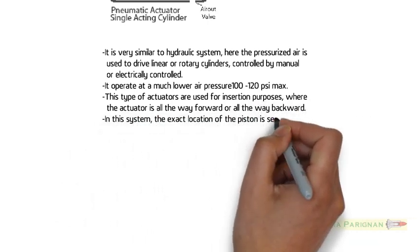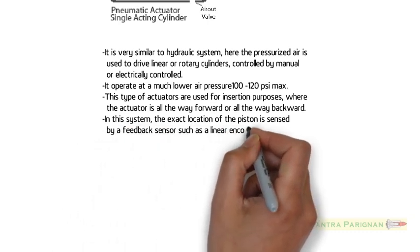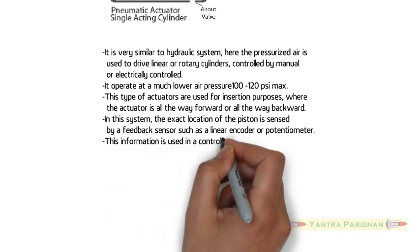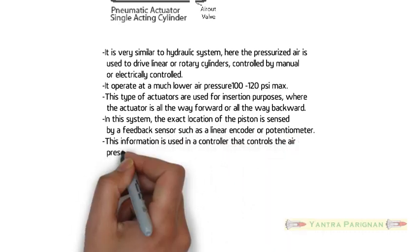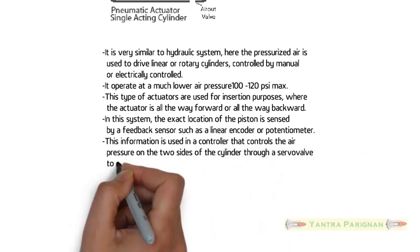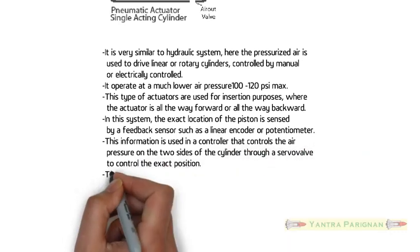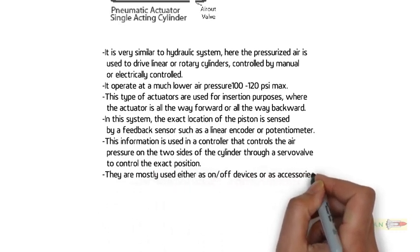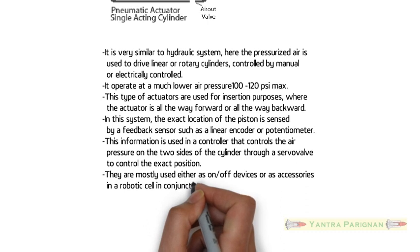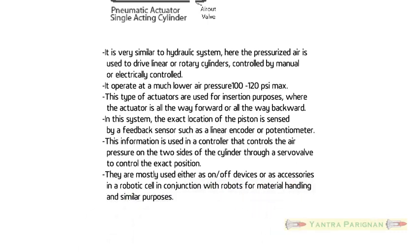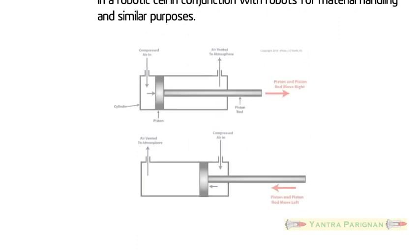In this system, the exact location of the piston is sensed by a feedback sensor such as a linear encoder or potentiometer. This information is used in a controller that controls the air pressure on the two sides of the cylinder through a servo valve to control the exact position. They are mostly used either as on-off devices or as accessories in a robotic cell in conjunction with robots for material handling and similar purposes. Figure shows how the compressed air is utilized to move the piston rod in left and right directions.